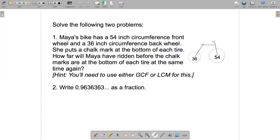The question is how far will she have ridden before the chalk marks are at the bottom of each tire at the same time again. Okay they were at the bottom of the tires at the beginning because she drew the chalk marks at the bottom of each tire. Then she started riding her bike and they're gonna coincide at the bottom of each tire again. Okay what's the first time that they do that?